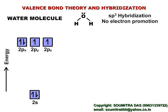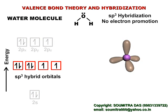Therefore all these four orbitals hybridize to form sp³ hybrid orbitals. Two of them have lone pairs and the other two are bonded with the 1s orbital of hydrogen atoms.